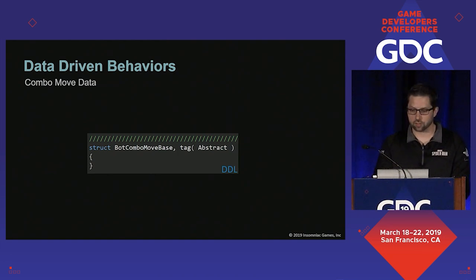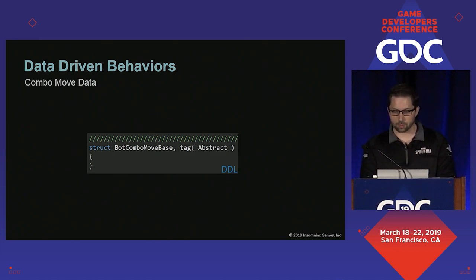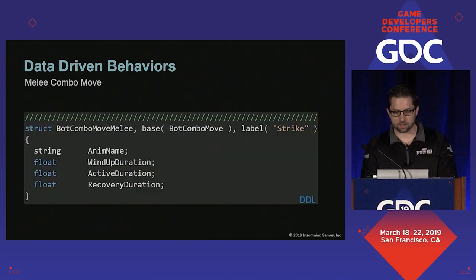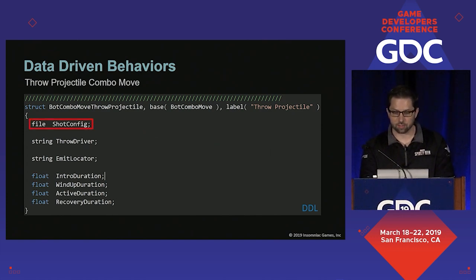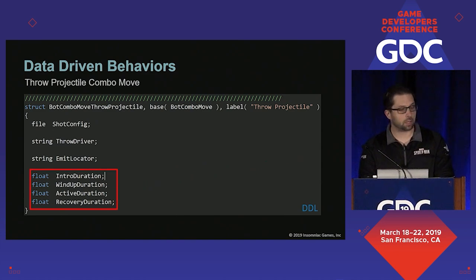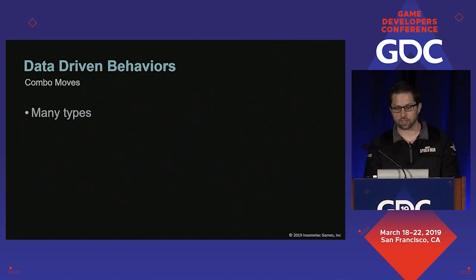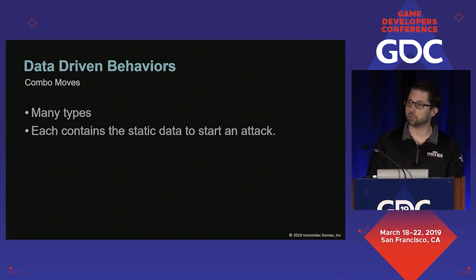All attack actions in combat will ultimately derive from a bot combo move base. These structs can represent all of the static data needed to execute, for example, a melee attack — this combo move has an animation to play as well as some data describing the timing for the attack. It could also represent throwing a projectile — this struct has data for the projectile asset to throw, what animation to use, where on the bot the shot should spawn, and some additional timing data. Each of these derived types contain all of the static data needed to start either a behavior or a state to perform the desired attack.